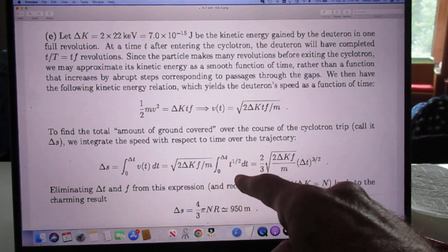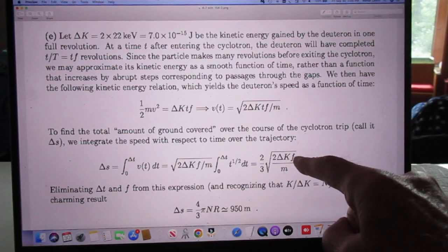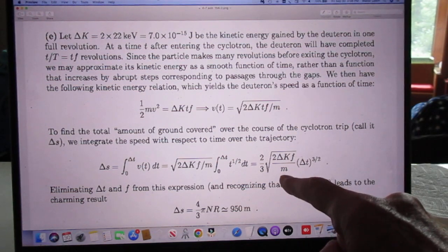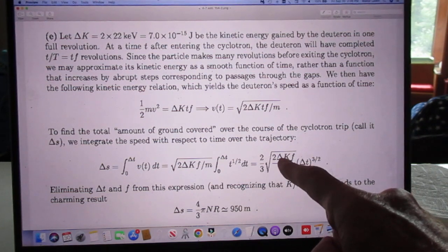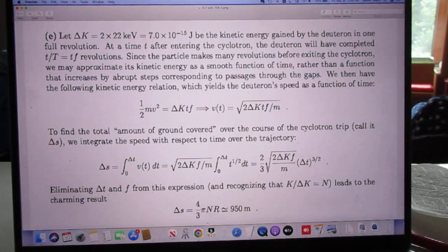That's a very easy one, you get here delta T to the power of three halves. You know F, you know M, you know delta K, you know delta T, out pops delta S, 950 meters.